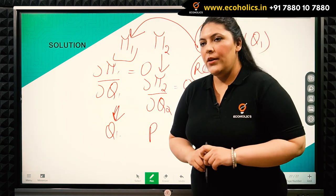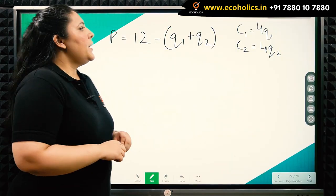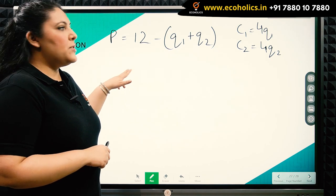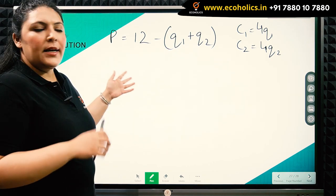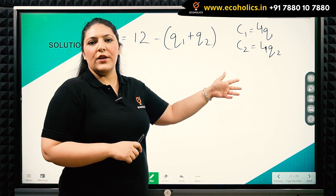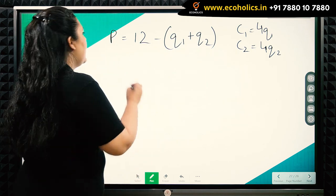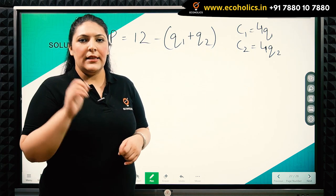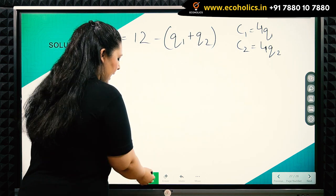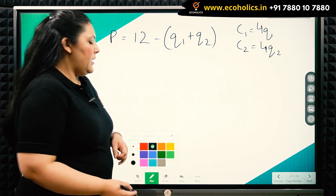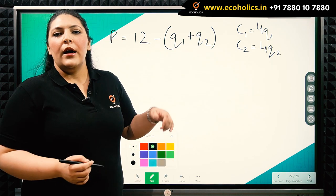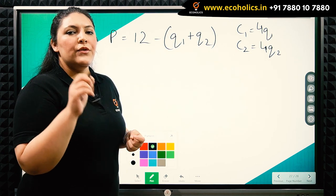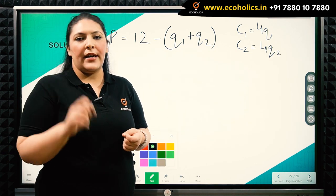Let's solve the numerical. We have the demand function for the entire market and the cost functions for both firms. The first firm has been given as the leader, and the leader has the ability to find out the reaction curve of the second firm. So firstly, we will find the reaction curve of the second firm.